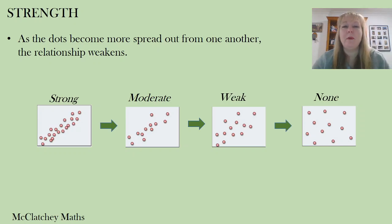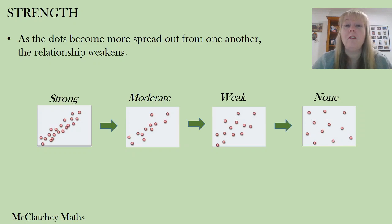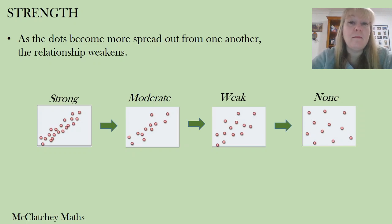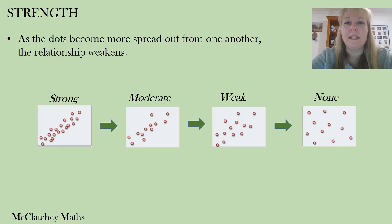It's really important that you become familiar with the different types of scatter plots because in exams you'll be asked to describe the correlation. What I typically see as a teacher is that people forget to talk about the form — they'll say positive or negative, and strong, moderate, or weak, but forget form and lose half a mark. Also, don't hedge your bets between strong and moderate; be precise. If it doesn't look strong, call it moderate.